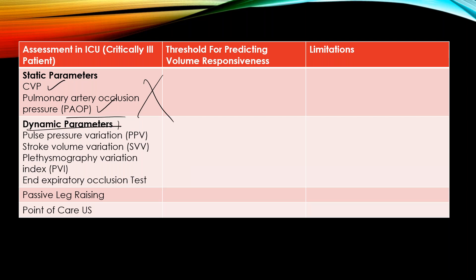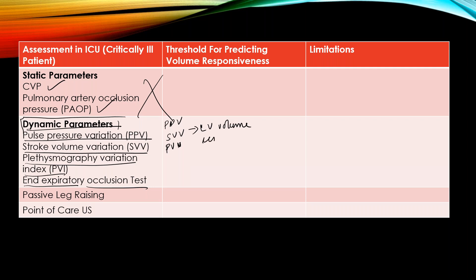So the next thing is dynamic parameters. We mostly use dynamic parameters: pulse pressure variation, stroke volume variation, plethysmography variation index, and expiratory occlusion test. Pulse pressure variation, stroke volume variation, and plethysmography variation index specifically predict left ventricular volume responsiveness only.